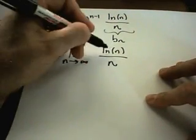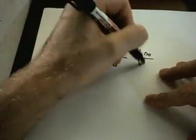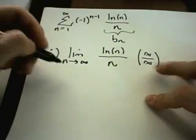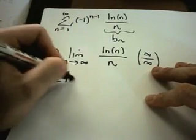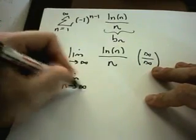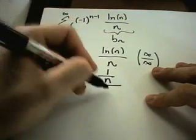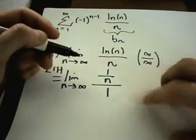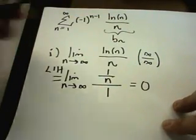Well right now as n goes to infinity, ln of infinity is infinity. You also have infinity on the bottom, so this is an indeterminate form. So we can use L'Hopital's rule. And L'Hopital's rule says just take the derivative of the top, that's 1 over n. The derivative of the bottom, that's just 1. Well this is equivalent to just plain old 1 over n. And as n goes to infinity, this certainly is going to equal 0.